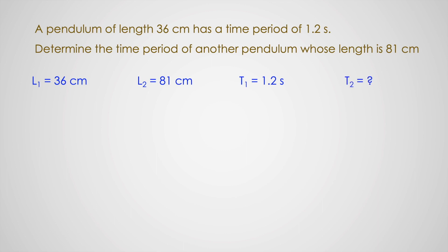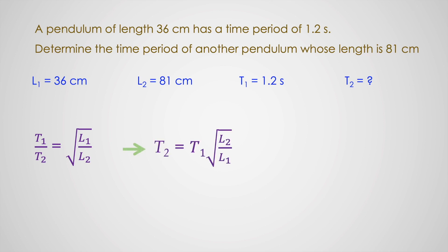The formula we are going to use is T1/T2 equals √(L1/L2). We make T2 the subject and then replace the values. When we replace the values, we get T2 equals 1.8 seconds. Simple.